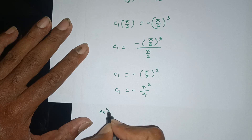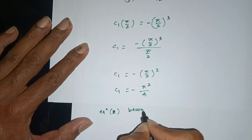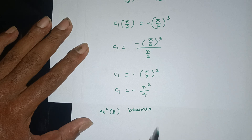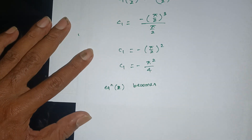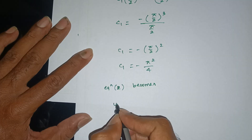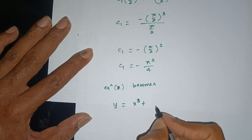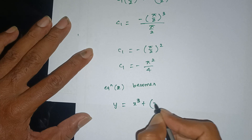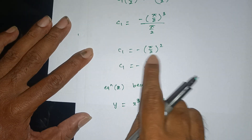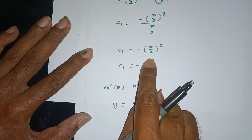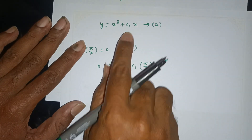Therefore equation 2 becomes: y = x³ + (−π²/4)·x, i.e., y = x³ − (π²/4)x. This is the required extremal curve.